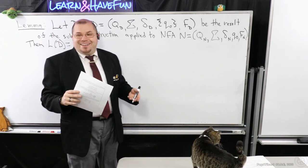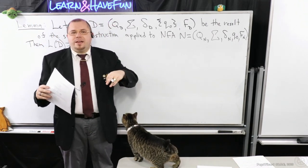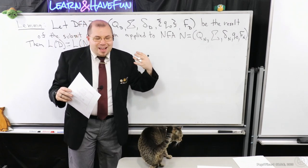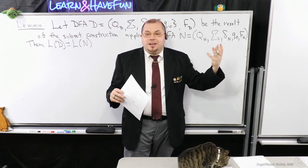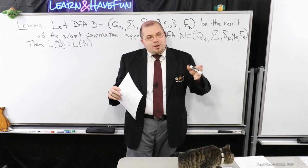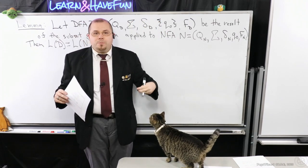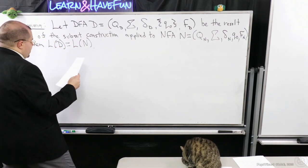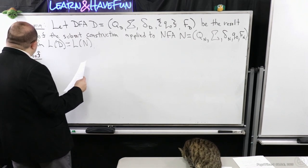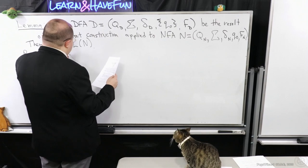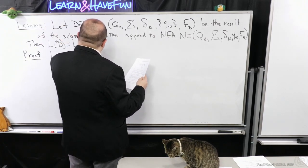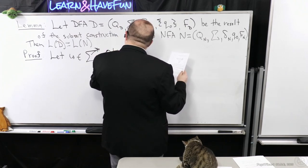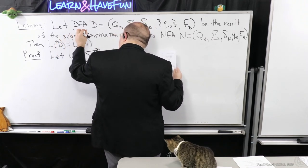So you might ask: what's the game plan here? Well, previously when we examined DFAs and NFAs, we took advantage of the inductive definition for their computations. We know the definition of what it means to accept a string with a DFA or an NFA. So we're going to use that inductive definition to help us prove that the languages of these two automata are the same. We'll use mathematical induction on the length of the string to achieve this. Let W be a string over the alphabet.